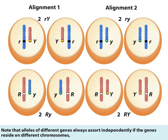Note that alleles of different genes always assort independently if the genes reside on different chromosomes, but not necessarily if they reside on the same chromosome.